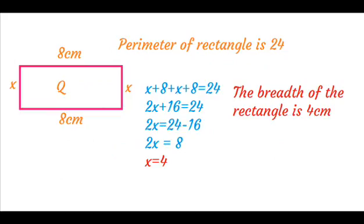Perimeter of rectangle is 24. The calculations are: x + 8 + x + 8 = 24, so 2x + 16 = 24.